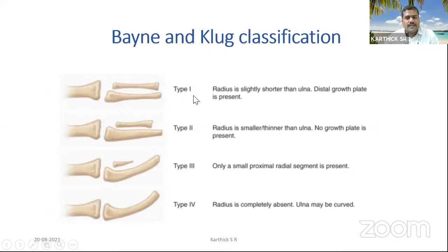The Bayne and Klug classification of radial club hand has four types. Type 1: radius is slightly shorter than ulna, distal growth plate is present but distal epiphysis may be delayed. Type 2: radius is smaller than ulna, no growth plate present. Type 3: only partial radius present, most commonly the distal one-third is absent. Type 4: the radius is completely absent with bowing of the ulna — the most common type, followed by type 1.